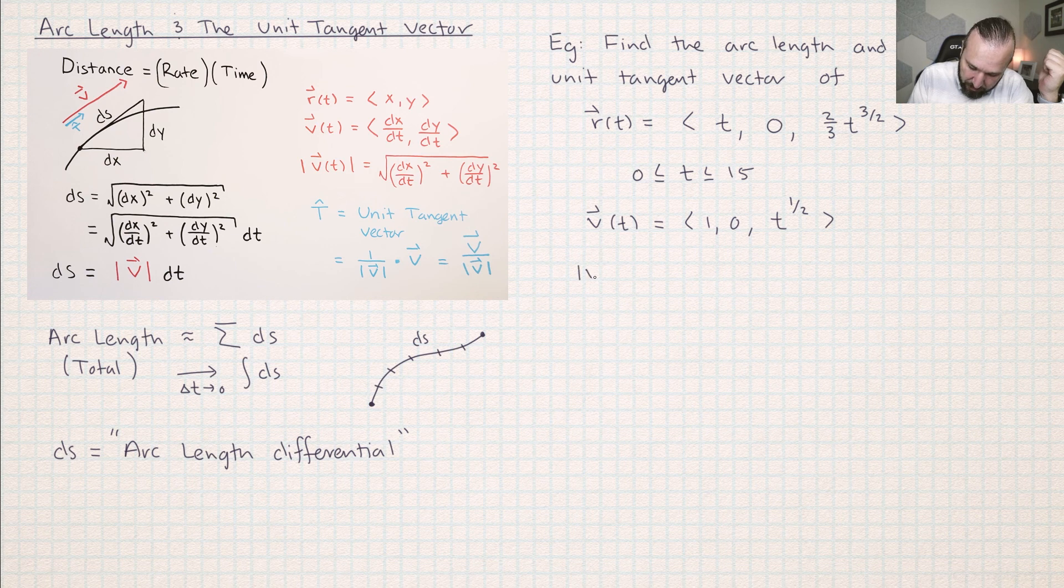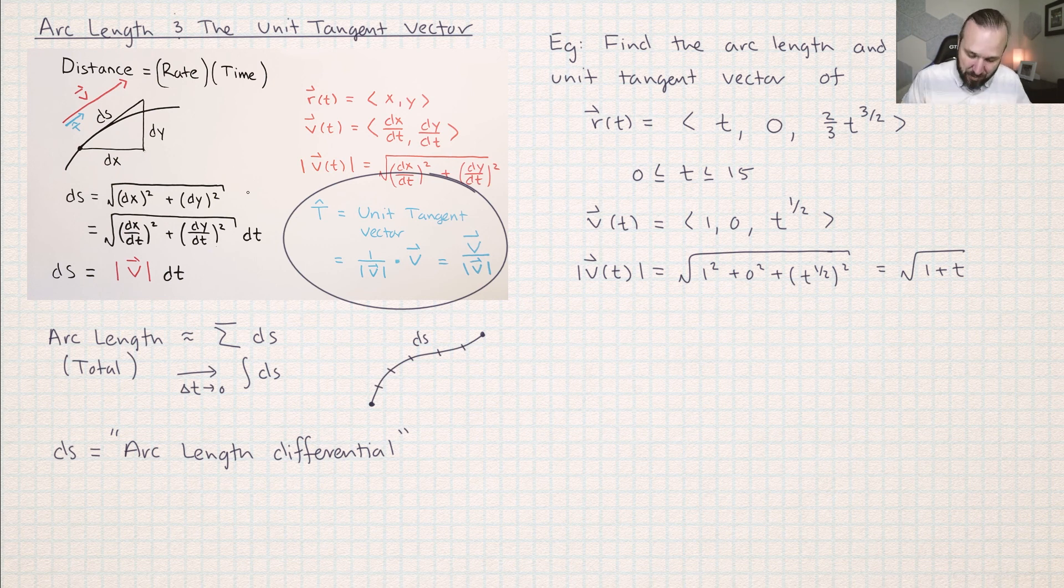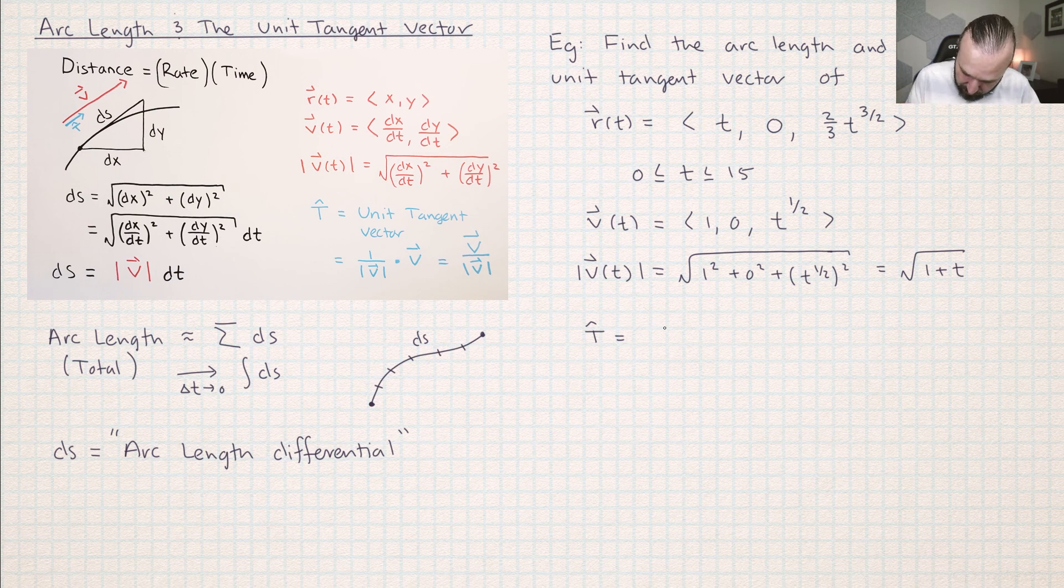So I'm going to calculate the magnitude of the velocity. I get the square root of one plus t. Recall that the unit tangent vector is just the velocity scaled down by the magnitude of the velocity. So we're really getting there. So to find the arc length and the unit tangent vector. So let's do that.